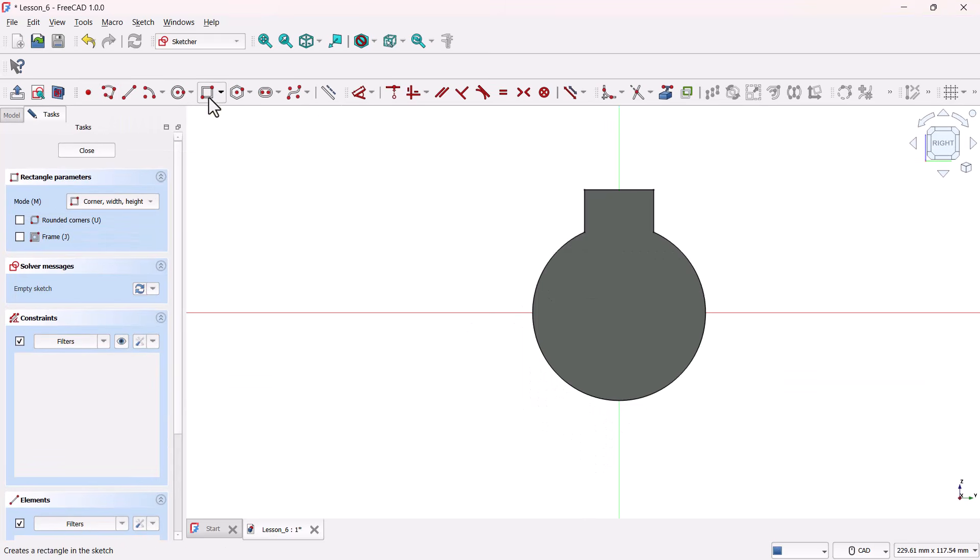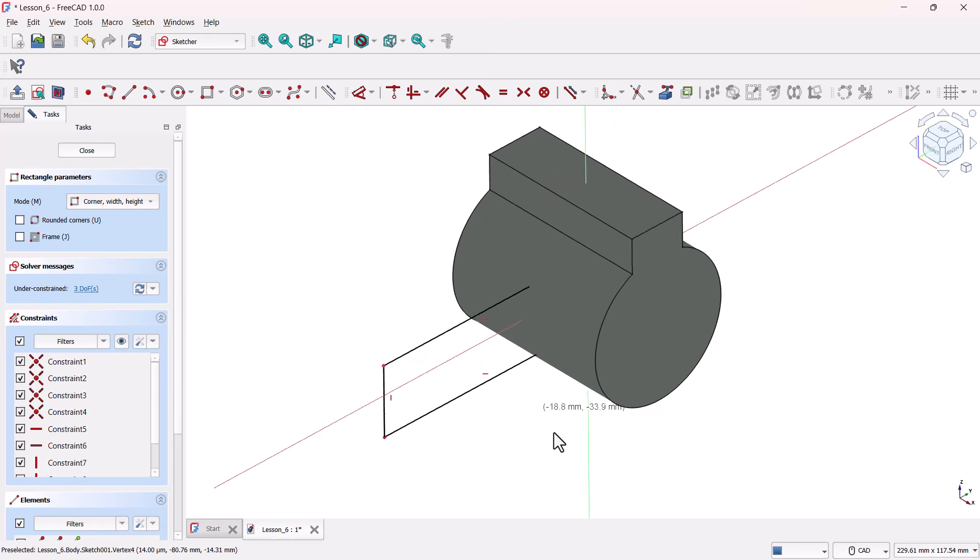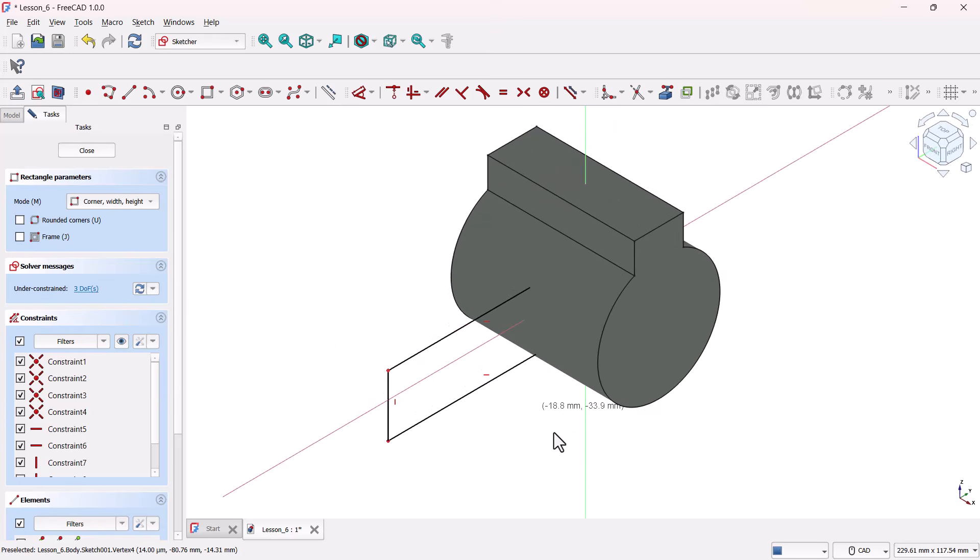Now, grab the Rectangle tool and draw a rectangle starting from the cylinder's center out to the side. Just rough it out for now, we'll fix the dimensions in a second. You might have noticed that the rectangle isn't visible here. Why? Because the sketch plane is inside the cylinder!